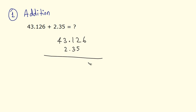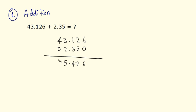You can add this as normal natural numbers. So, 6 plus 0 is 6. 5 plus 2 is 7. 3 plus 1 is 4. The point comes down as it is. Then, 3 plus 2 is 5. And 4 plus 0 is 4. So, this answer is 45.476. This is how you add decimal fractions.